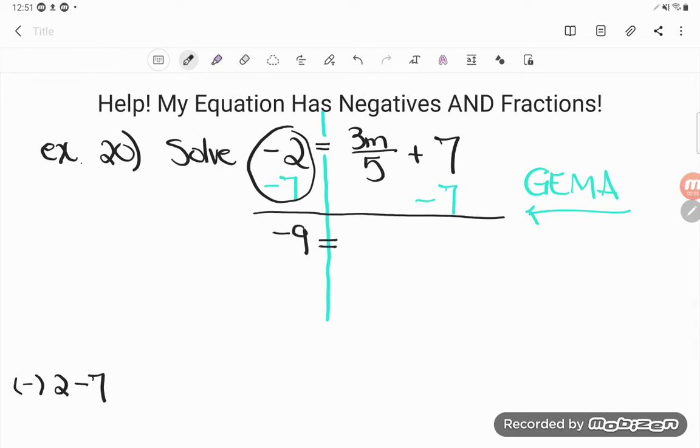And that's going to be equal to whatever happens on the right-hand side. And look, this is nice. The add seven and the subtract seven are opposites. They cancel. So all I'm left with is the 3M over five.